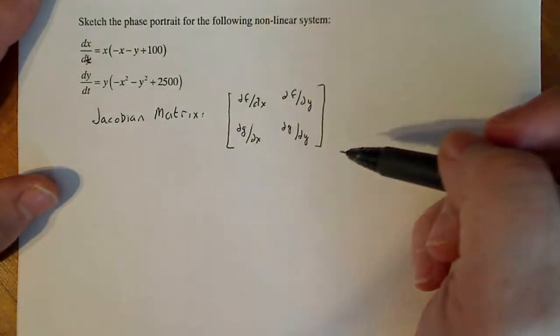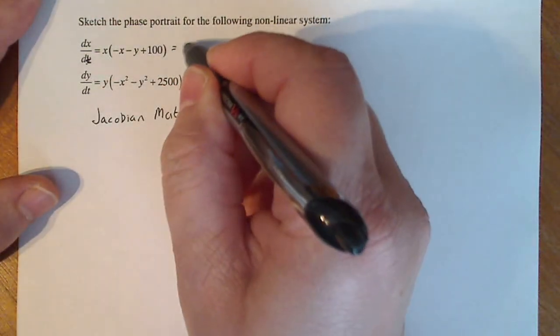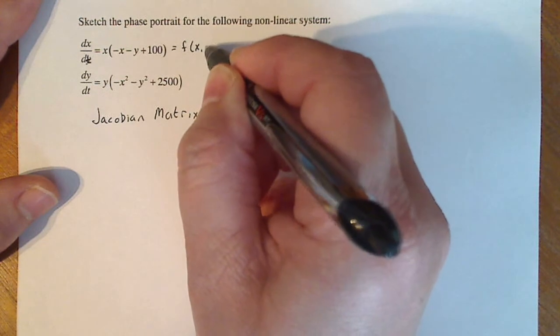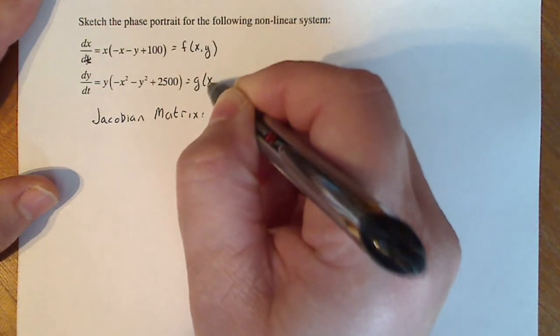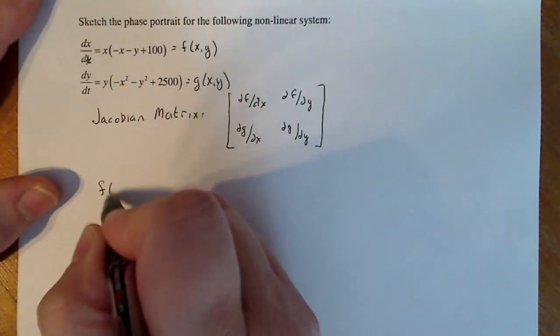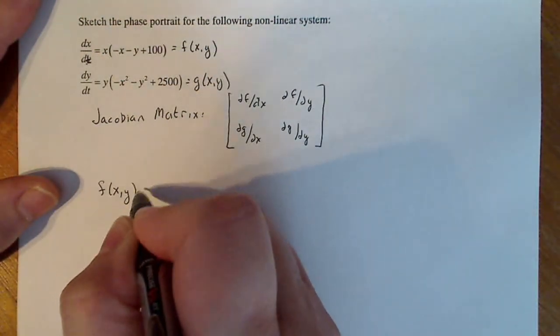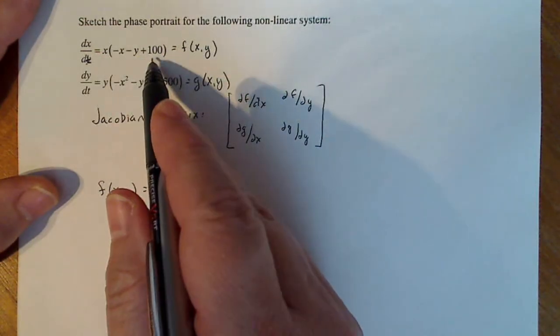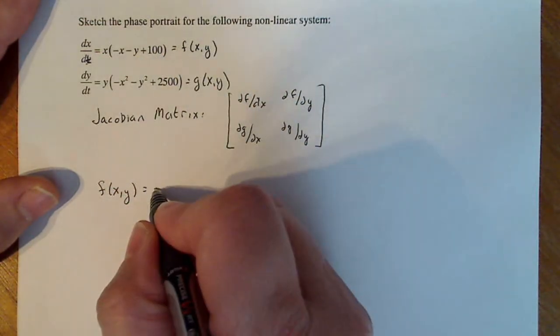So what is F and what is G? According to this, this is F of X, Y and this is G of X, Y. So I'm just going to write them out. It's easier for me to find partial derivatives if I multiply everything out, especially since these are polynomial. So F of X, Y is minus X squared minus XY plus 100X.